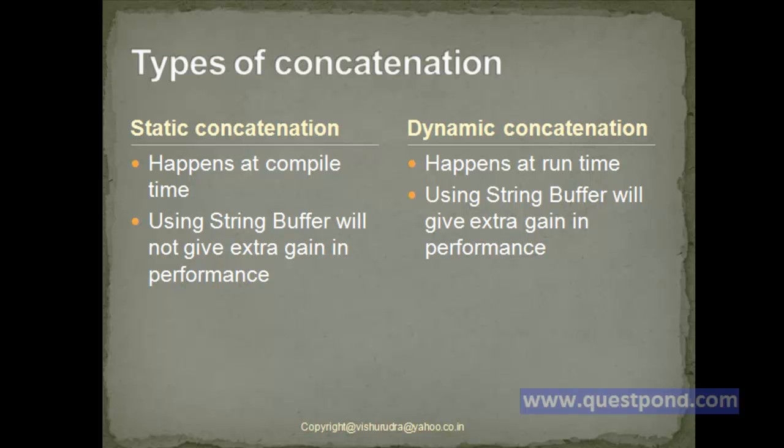In the case of static concatenation, the concatenation of string happens right at compile time itself. While in the case of dynamic concatenation, it happens at runtime. Whenever we have static concatenation, there will be no performance gain by using StringBuffer. While on the other hand, if we have dynamic concatenation, then StringBuffer will give better performance. Let's try to understand more about this with an example.